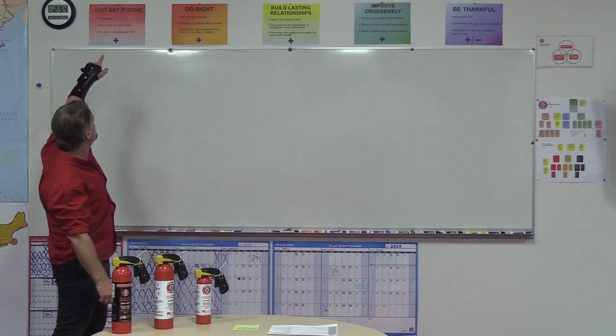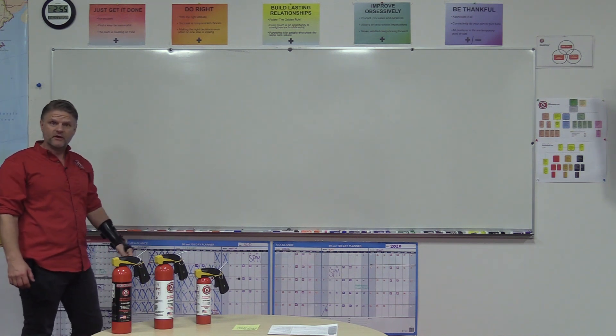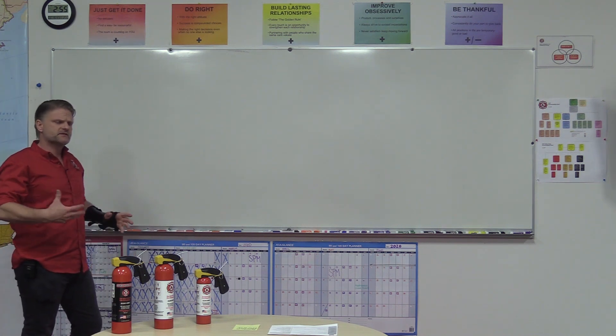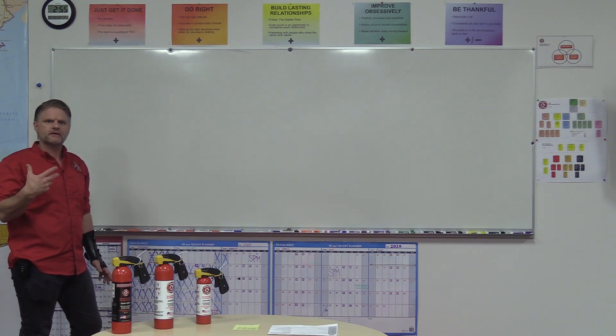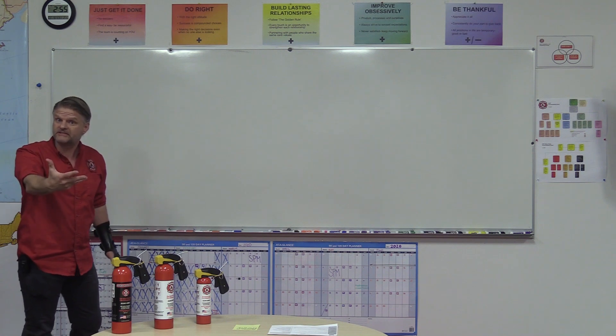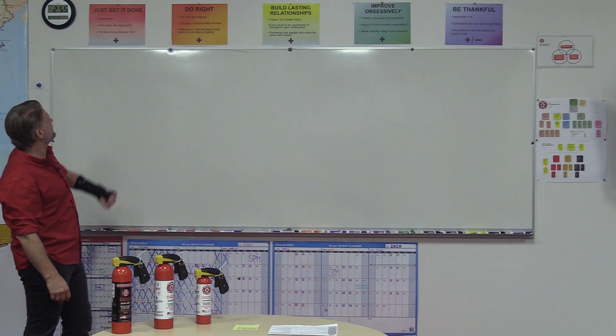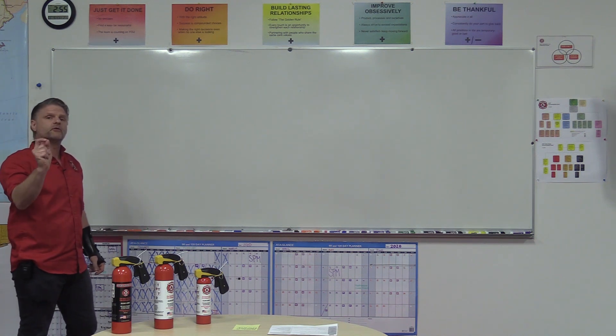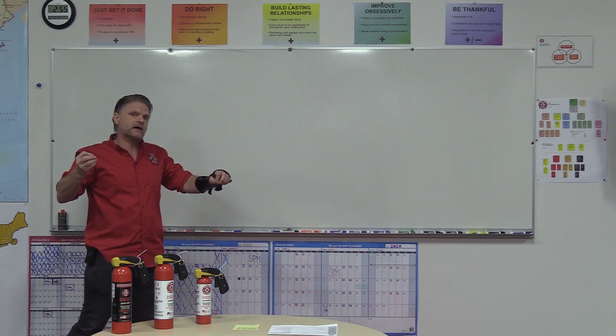Our first core value: just get it done. Underneath it we've got some bullets. No excuses. Excuses are like that part of your keister and everybody's got one and they all stink. It's a video so I use gentle words. Find a way. Be resourceful. The team is counting on you, and 'you' is all caps. It's very important because we want people to know not just that they can count on the team, but the team must be able to count on them.